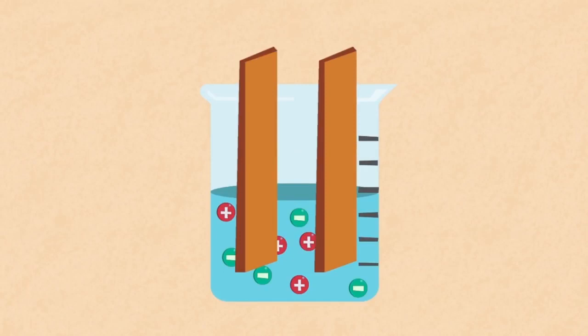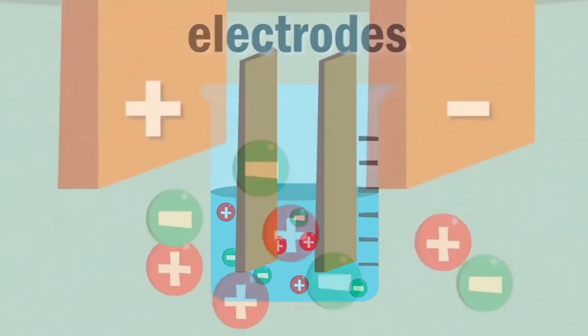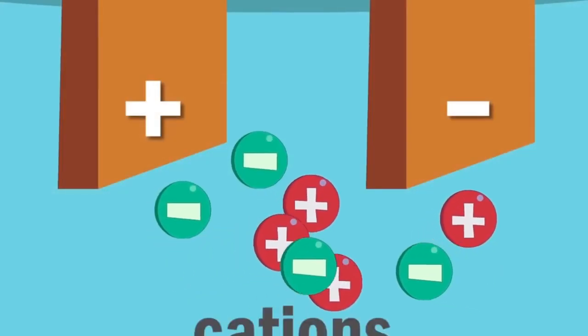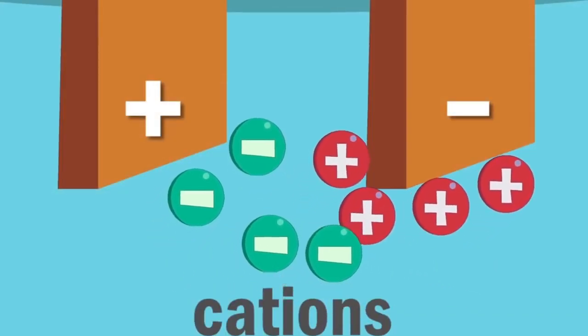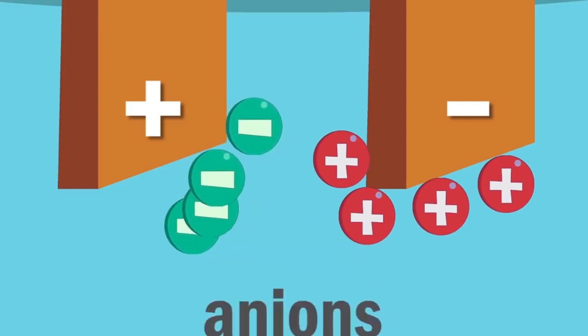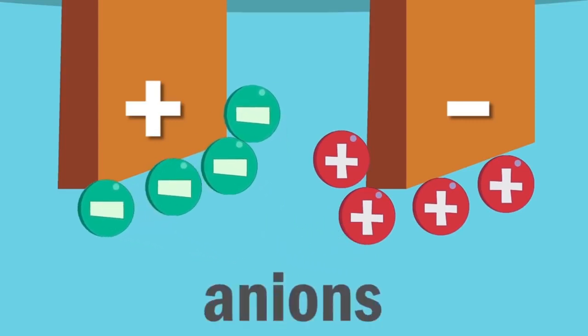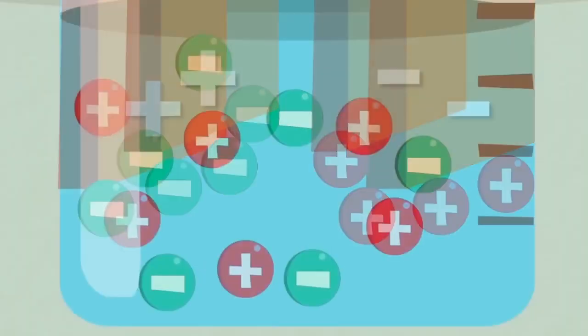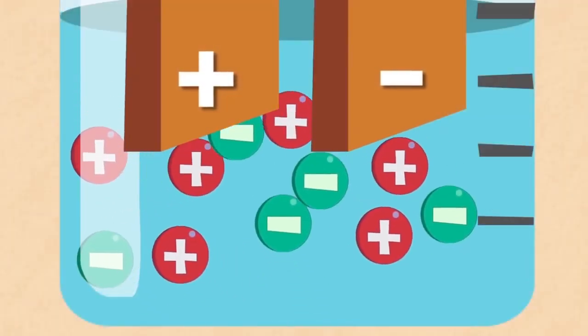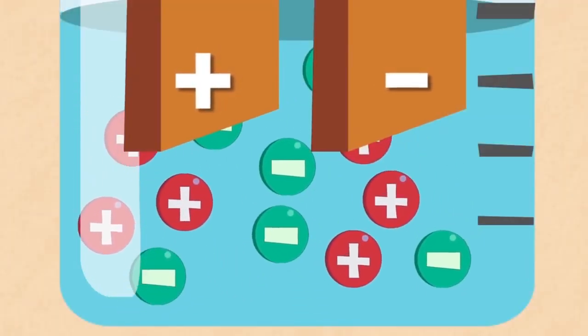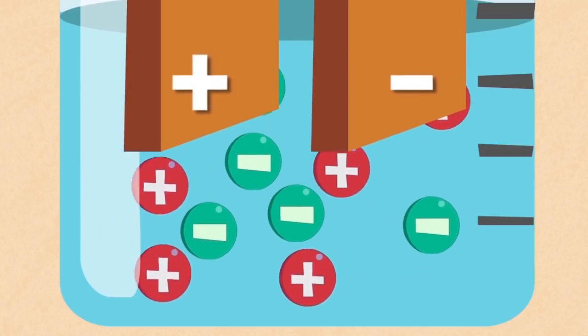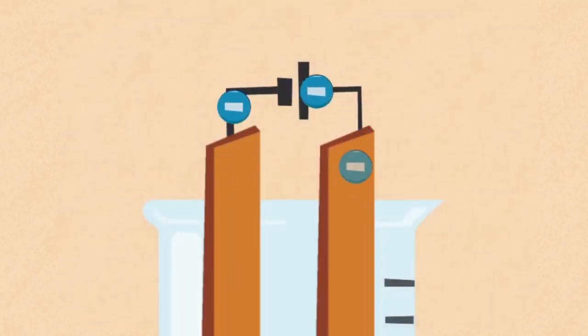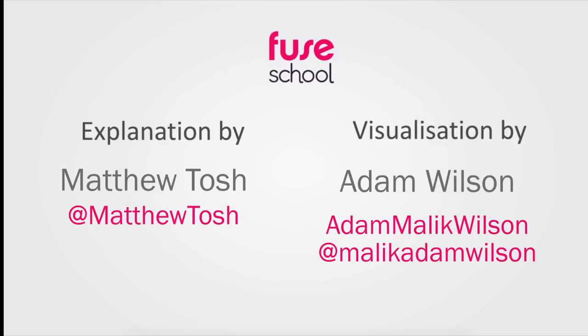The conducting plates, bars or wires inserted into an electrolyte are called electrodes. Positive ions are called cations and are attracted to the cathode. Negative ions are called anions and are attracted to the anode. When current flows in an electrolyte, it is the ions that move and carry the electrical charge. When current flows in the electrodes and wires, it is the electrons that move and carry the electrical charge.